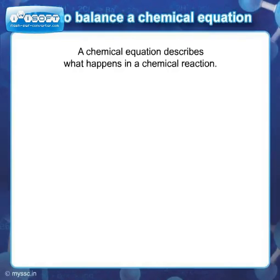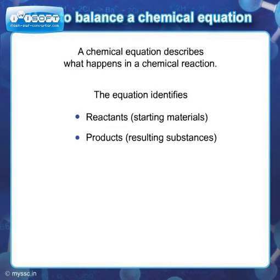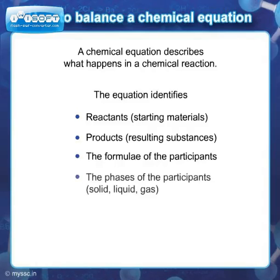A chemical equation describes what happens in a chemical reaction. The equation identifies the reactants that are starting materials and products that are resulting substances, the formulae of the participants, the phases of the participants namely solid, liquid or gaseous, and the amount of each substance.